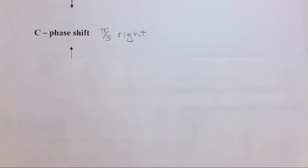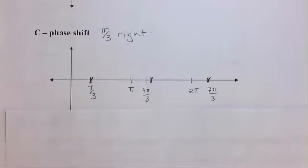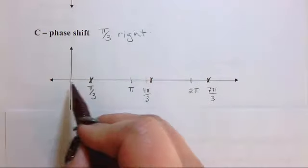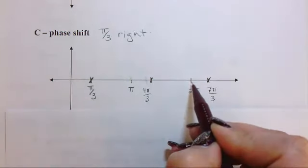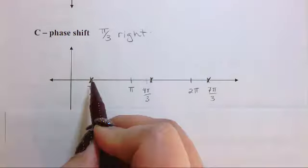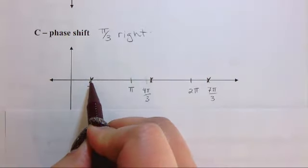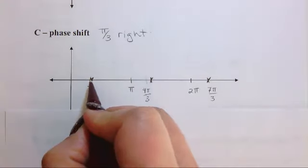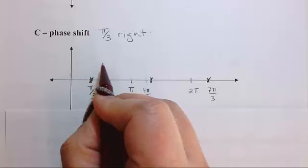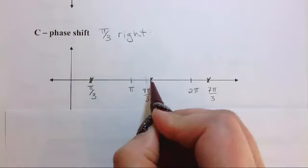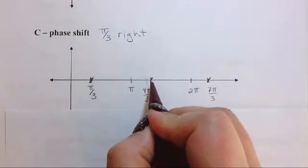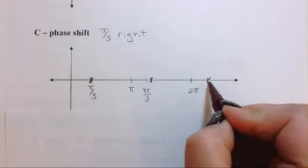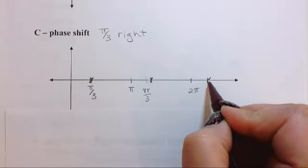Now our phase shift, this tells us that we're moving things to the right. Originally, our sine graph would have a period of 2π. And it would start here and it would go like that, right? But in this case, everything gets shifted over π by 3 units to the right. So I'm going to start drawing my sine curve here, it's going to cross through the x-axis at 4π by 3, and then back up and it's going to end at 7π by 3. That's for my π by 3 shift.